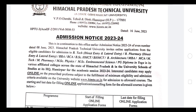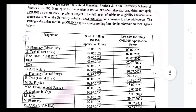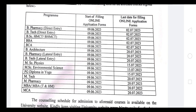अब सभी को पता है, सभी form भर भी रहे होंगे। साइट के साथ जो technical issues थे वो ठीक हुए होंगे। तो यह देखें आप लोगों की program की list है। यह starting date सभी की 9 June थी। आपकी जो last date है वो अलग-अलग है, तो ध्यान रखें — सबकी last date अलग-अलग है।